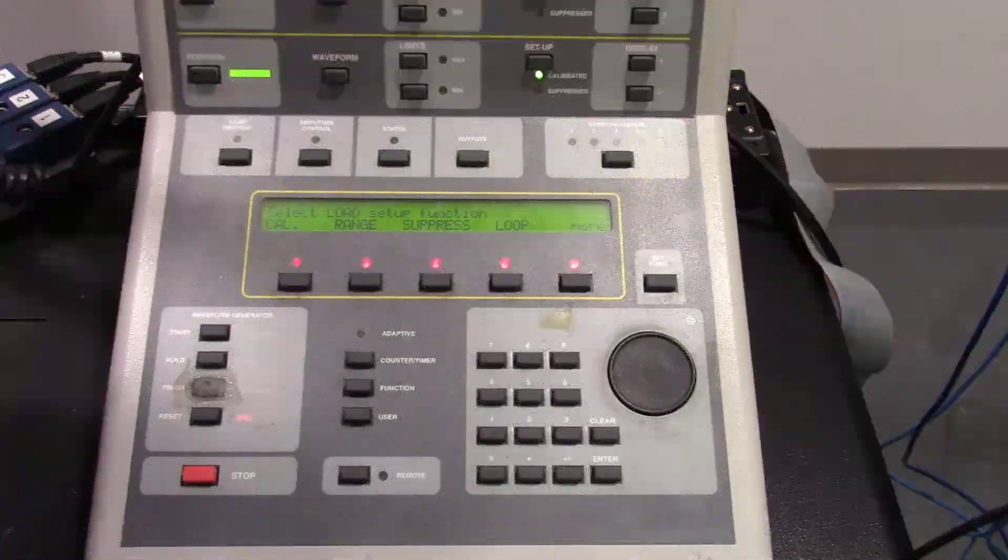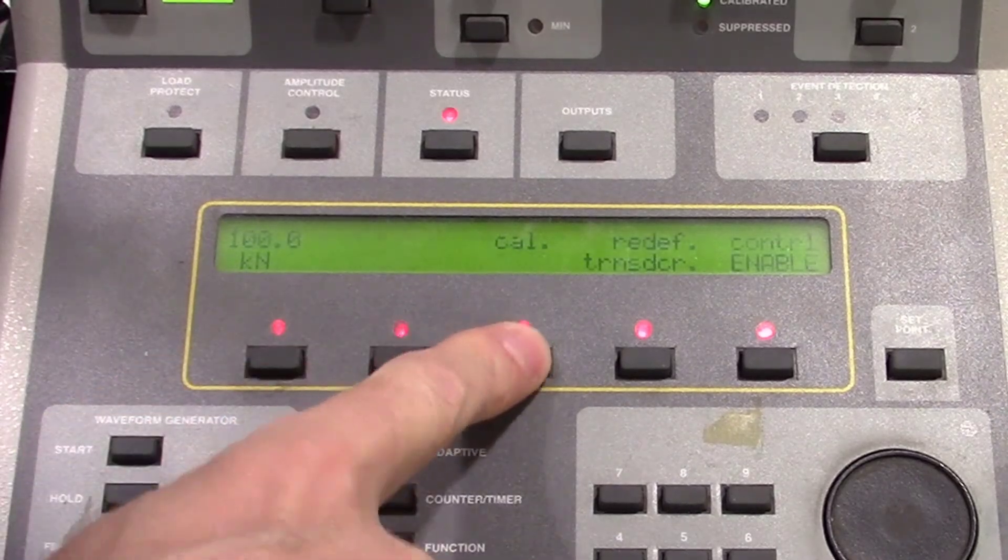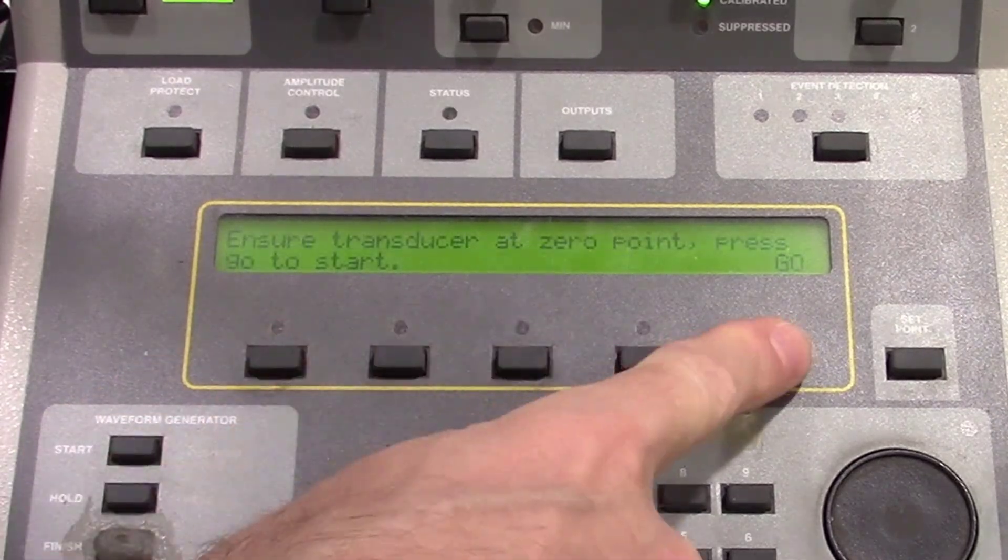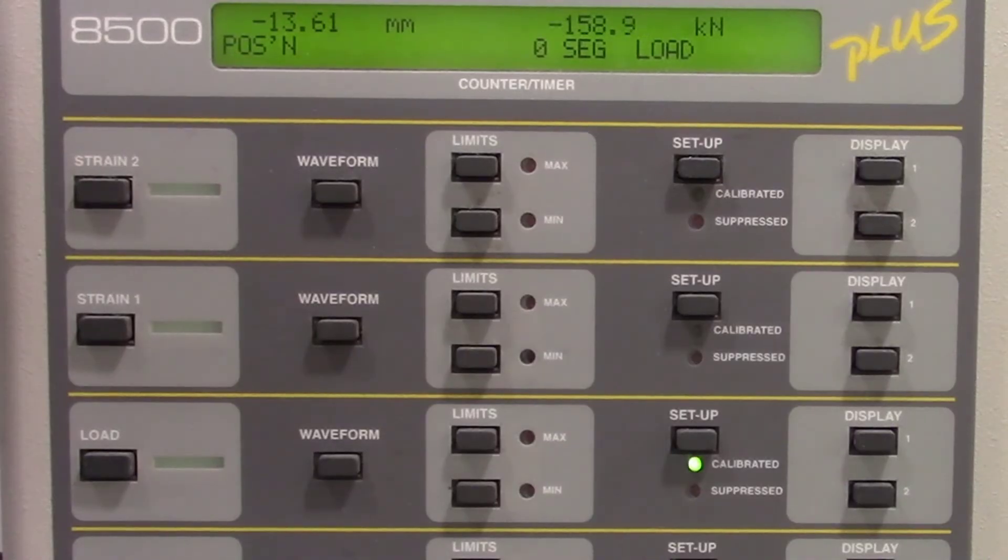On the lower console, press the soft key sequence CAL, CAL, AUTO, and then GO. The LED will begin to rapidly blink during calibration. When calibration is finished, the LED will glow steady.